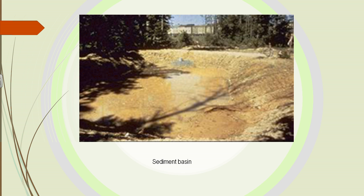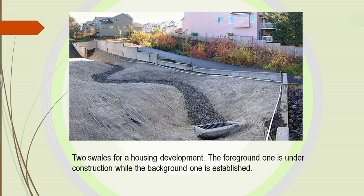This is a sediment basin — as it rains, it fills up with water and the sediment settles at the very bottom, where it can dry up and be removed later on. Here are two swales for a housing development. The one in the background has been well developed, so as the water comes down it is slowed by the earth and the plants, giving time for it to settle back into the earth and for the plants to remove the pollutants.